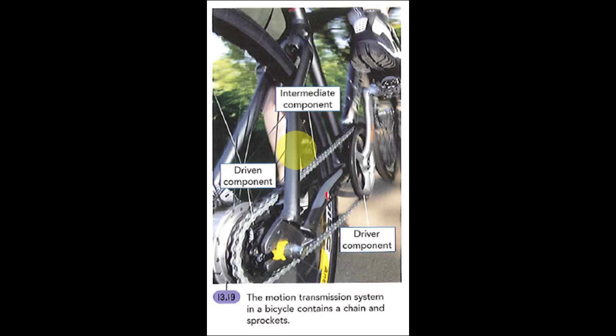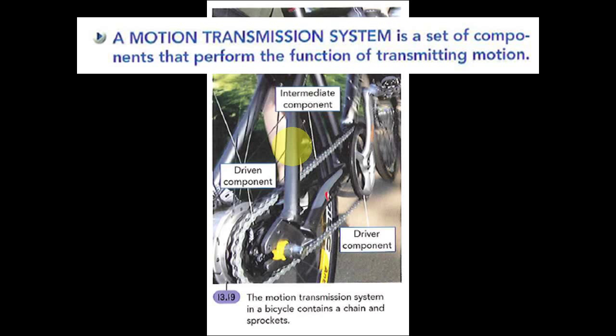And that chain links the big gear in the front onto the back gear in the back, obviously. And that's what moves the back wheels. So this is an example of a motion transmission system where a set components perform the function of transmitting motion.